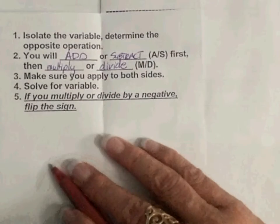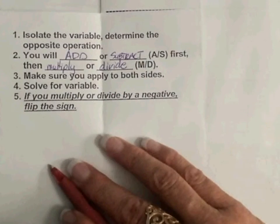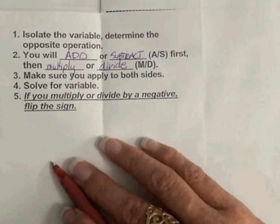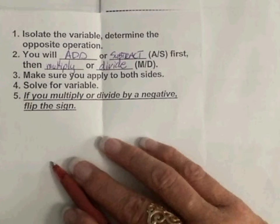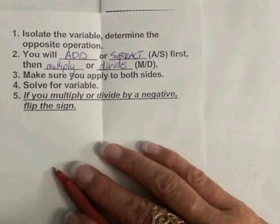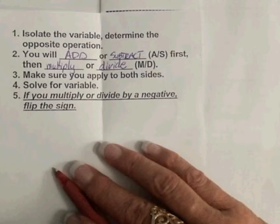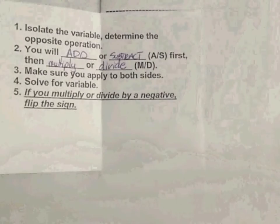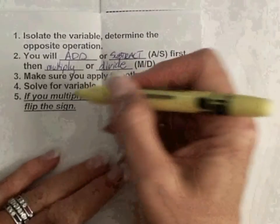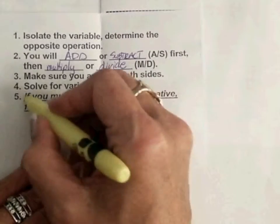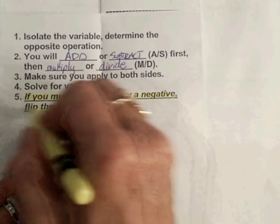And so again, solving inequalities is very similar to solving equations with a few differences. So you do want to isolate the variable and determine the opposite operation. Then you will add or subtract first, then multiply or divide. Make sure you apply to both sides. Solve for the variable. Now, if you multiply or divide by a negative, you need to flip the sign. We will go over that shortly and have an example on that so you know what we mean by that.